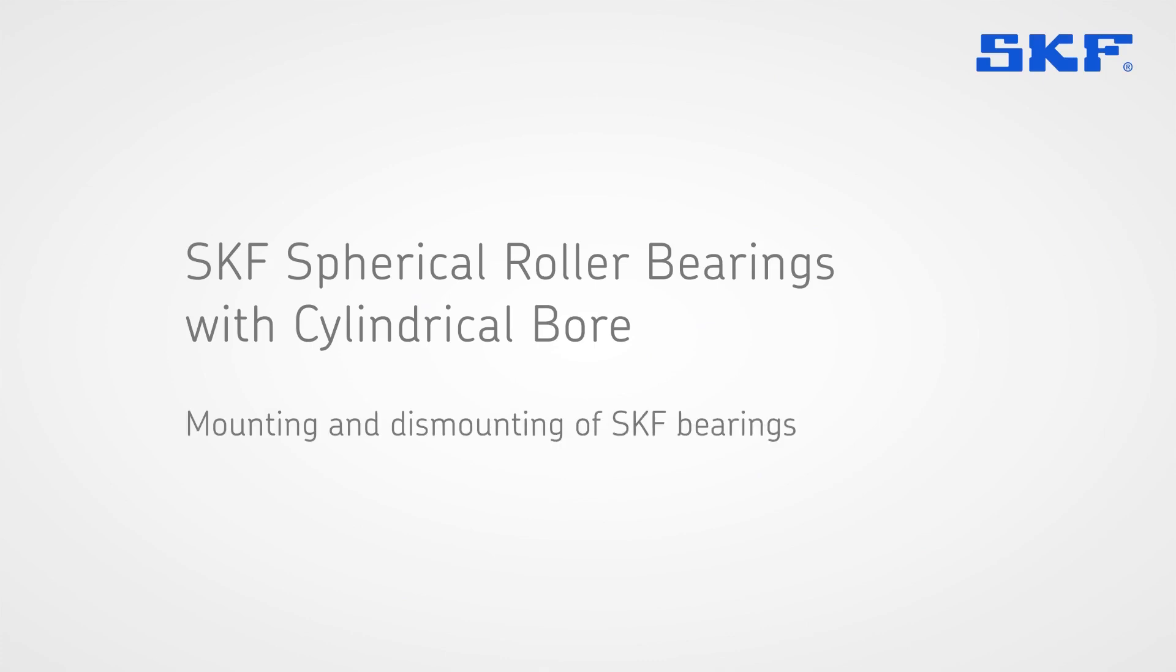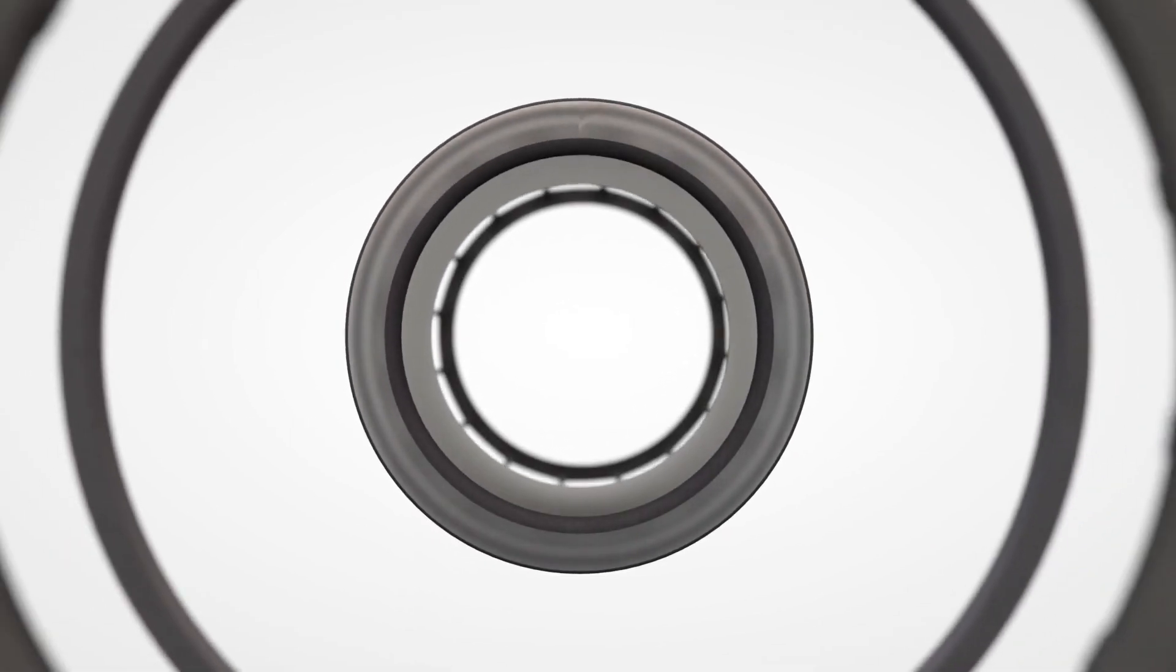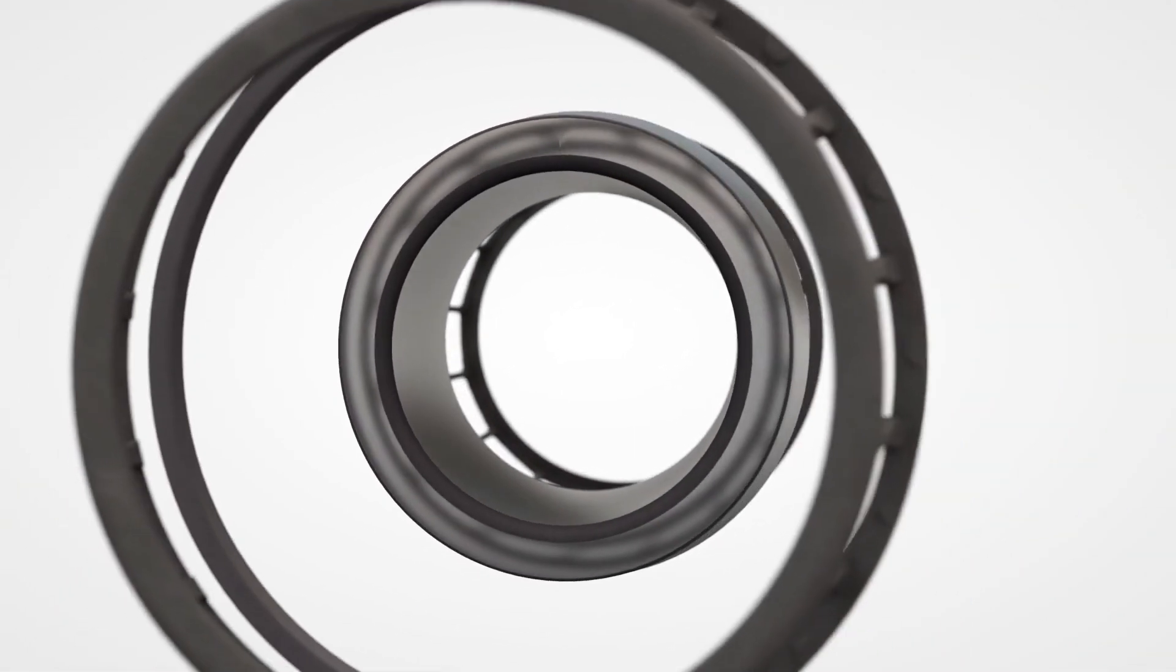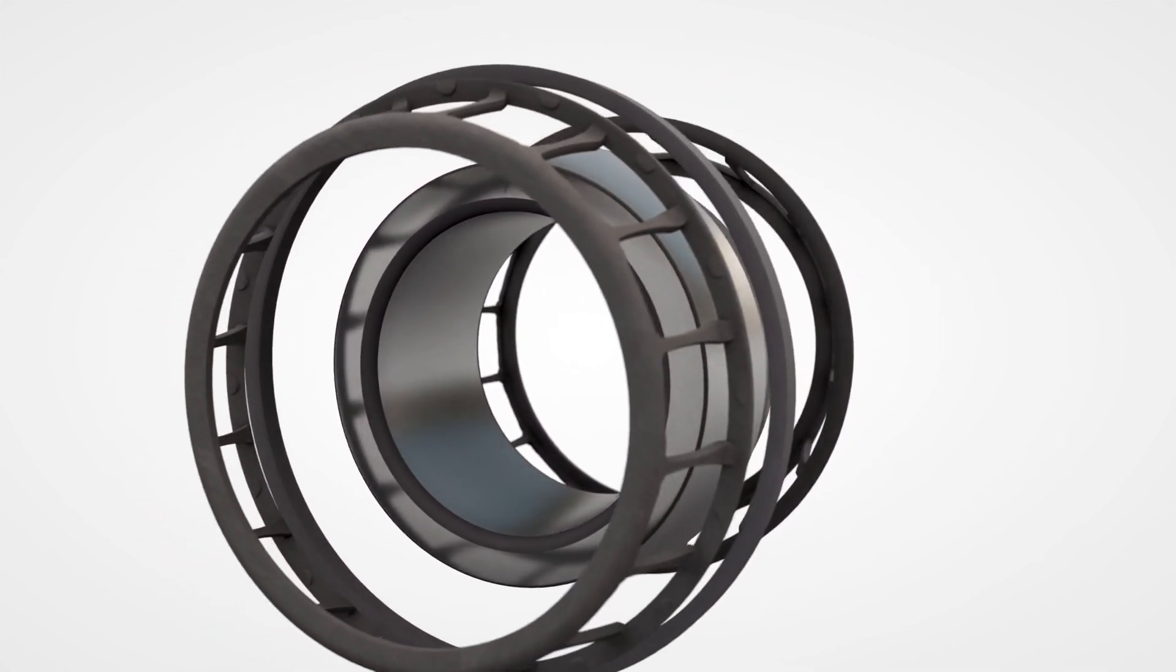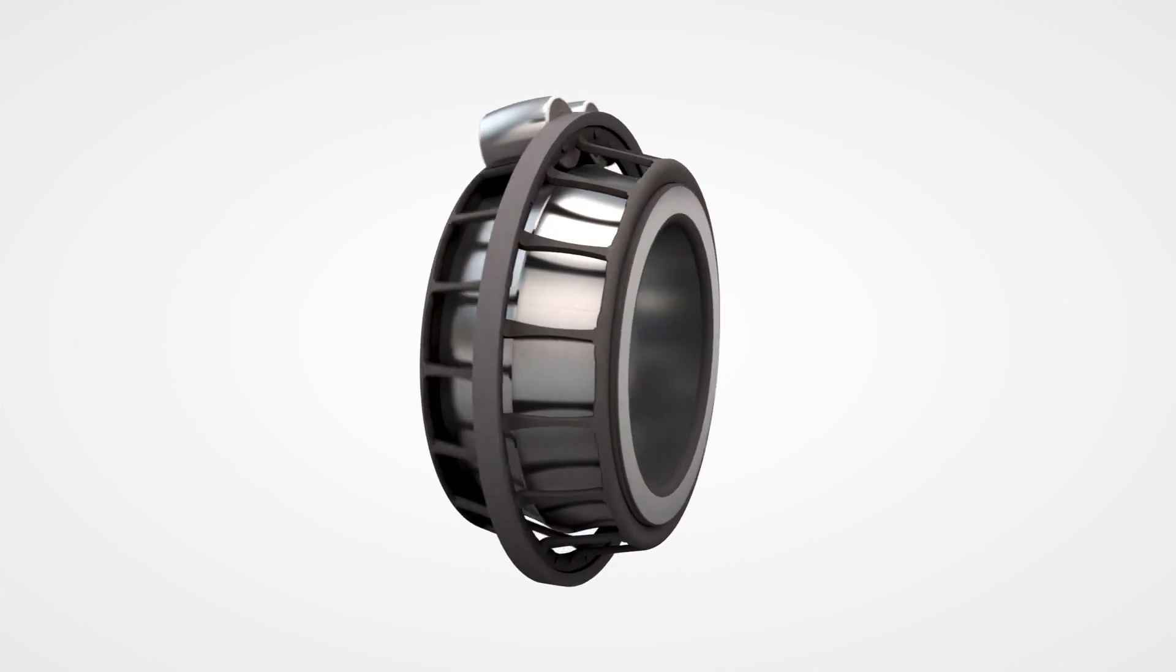This SKF training film is about spherical roller bearings with a cylindrical bore. The spherical roller bearing consists of an inner ring with two raceways and two rows of spherical rollers in separate cages, a guide ring and an outer ring with a sphered raceway.